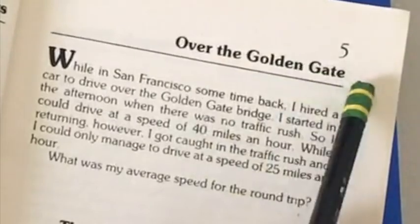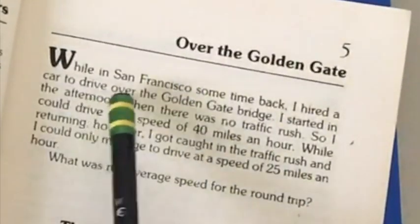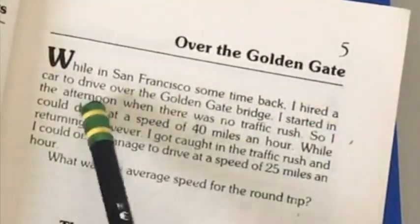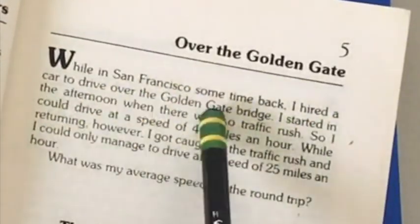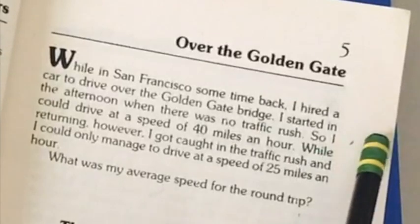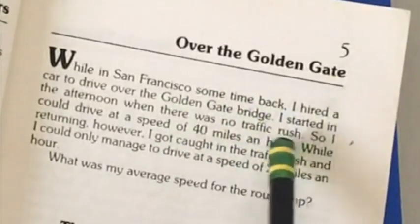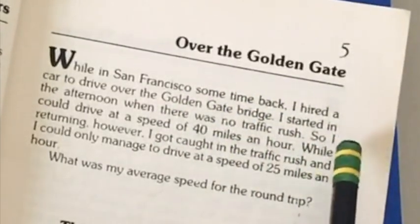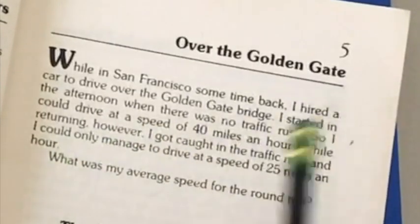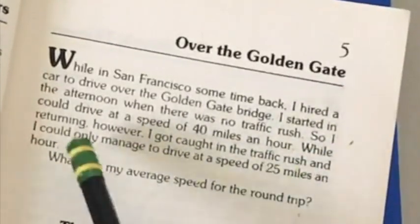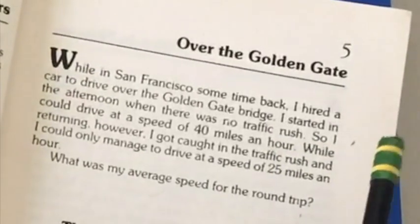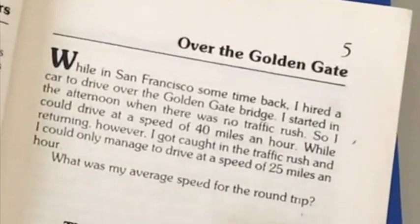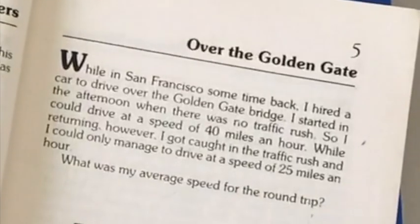Over the Golden Gate. While in San Francisco some time back, I hired a car to drive over the Golden Gate Bridge. I started in the afternoon when there was no traffic rush so I could drive at a speed of 40 miles an hour. While returning, however, I got caught in the traffic rush and I could only manage to drive at a speed of 25 miles an hour. What is my average speed for the round trip?